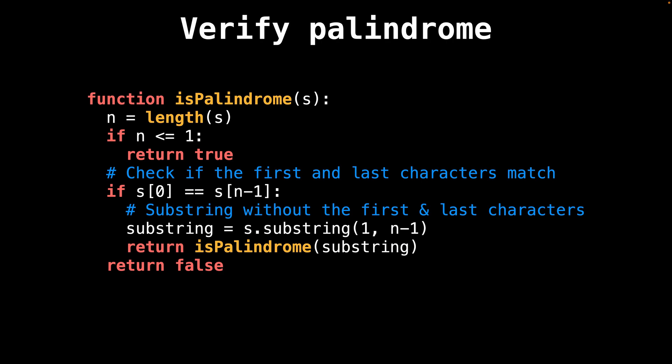Here's some pseudocode on how you would check that the string is a palindrome using the outside in method we just looked at. First, we check our base case to see if the length of the string is less than or equal to one. This indicates that the recursion has come to an end and the string is now either a single character or an empty string, both of which are trivially palindromes.